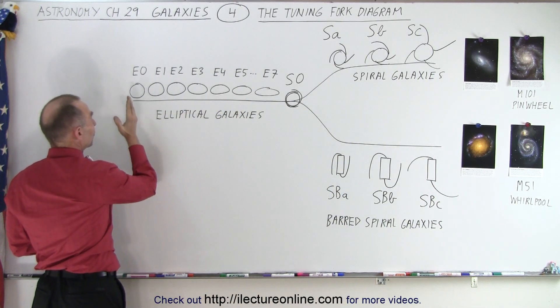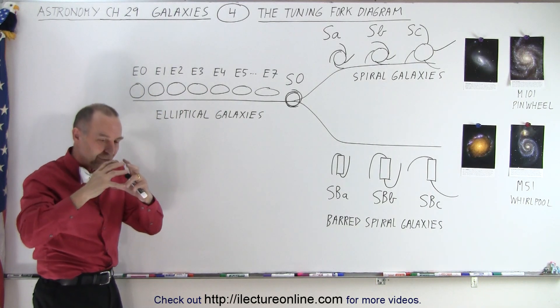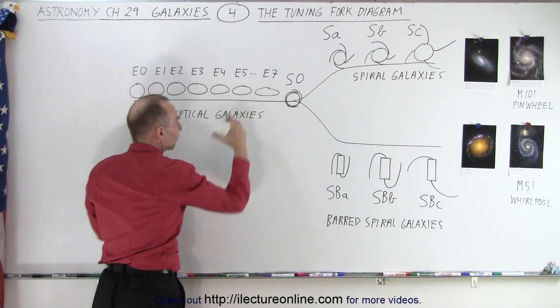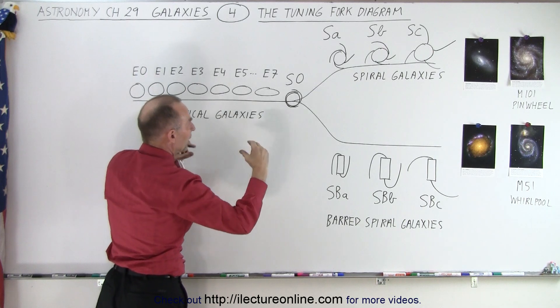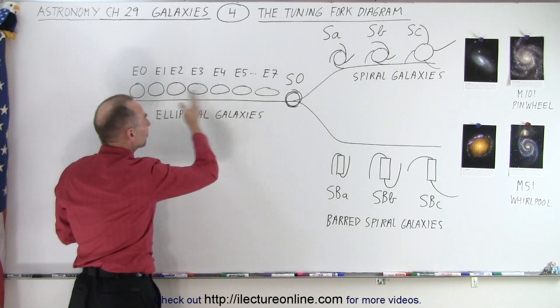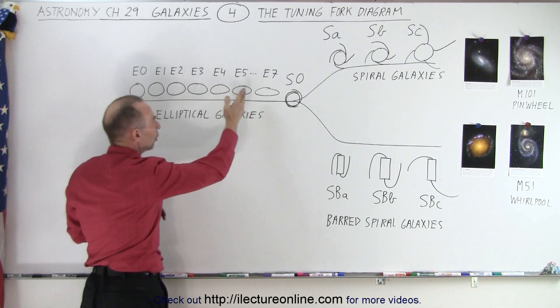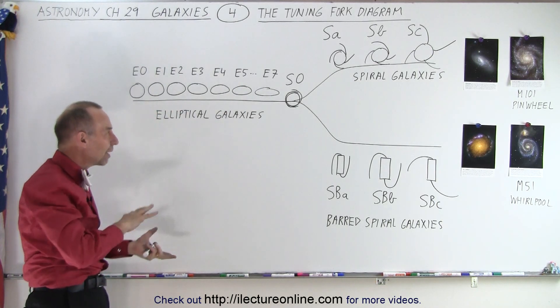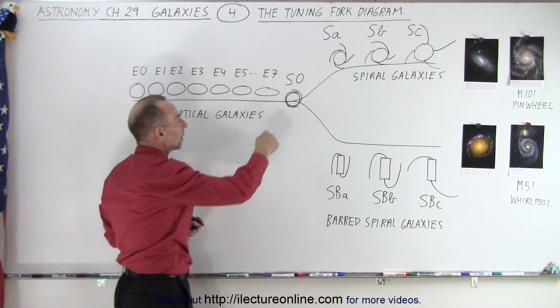Now for the elliptical galaxies we have them classified from E0 all the way to E7. E0, they're essentially spherical, and when they're E7s they're very flattened out, very elliptical, and all the various types in between. So we go from E0 all the way to E7, and then we have kind of an in-between, between a spiral and an elliptical galaxy, where the spiral arms are so tightly wound you really can't distinguish them from the central bulge.